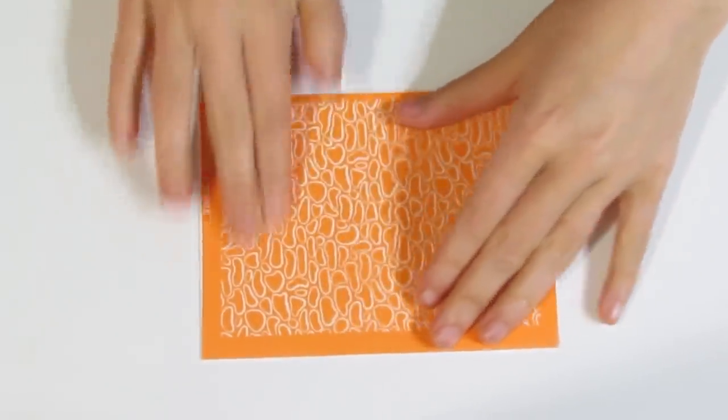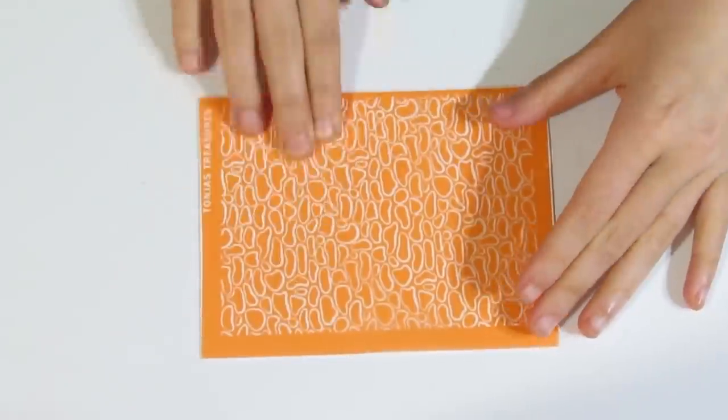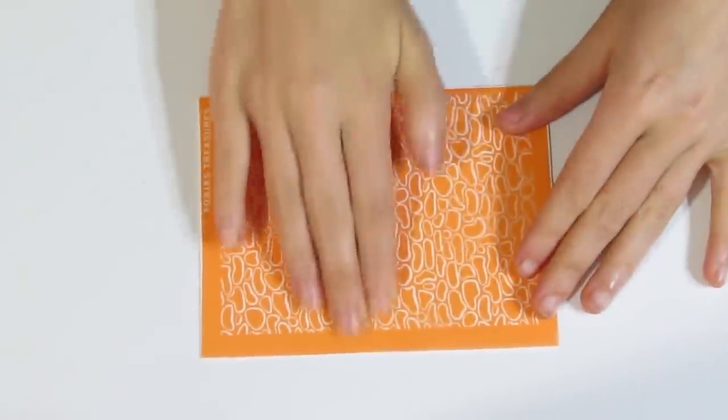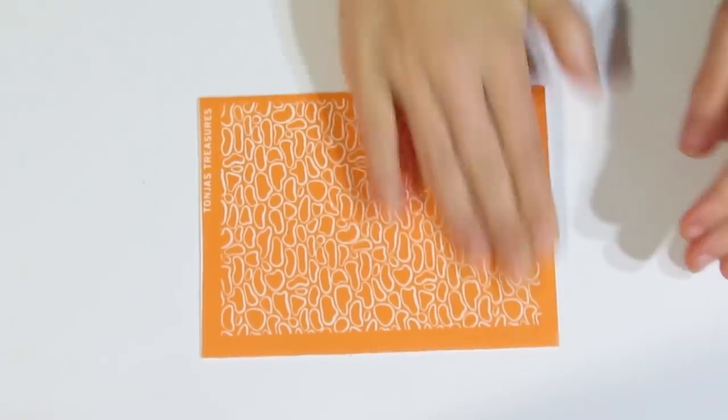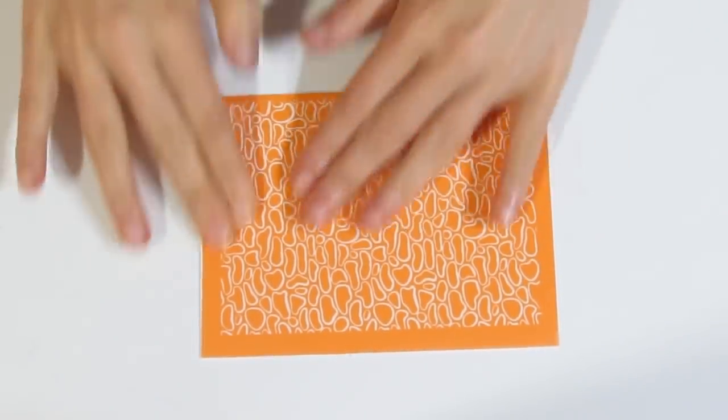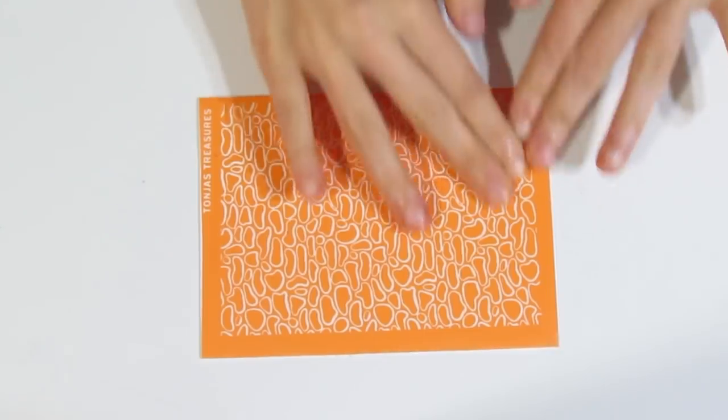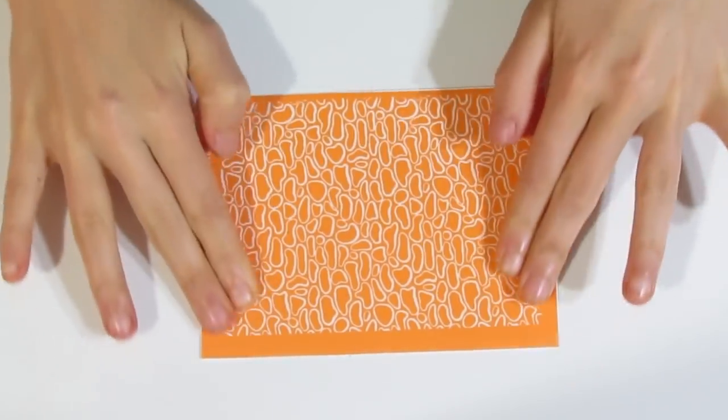Now I'm just going to make sure that I burnish this down thoroughly. Not so much that you're going to end up burnishing clay into the silkscreen, but just enough that it's going to stick down. And we shouldn't have any leakages whenever we are working with it.